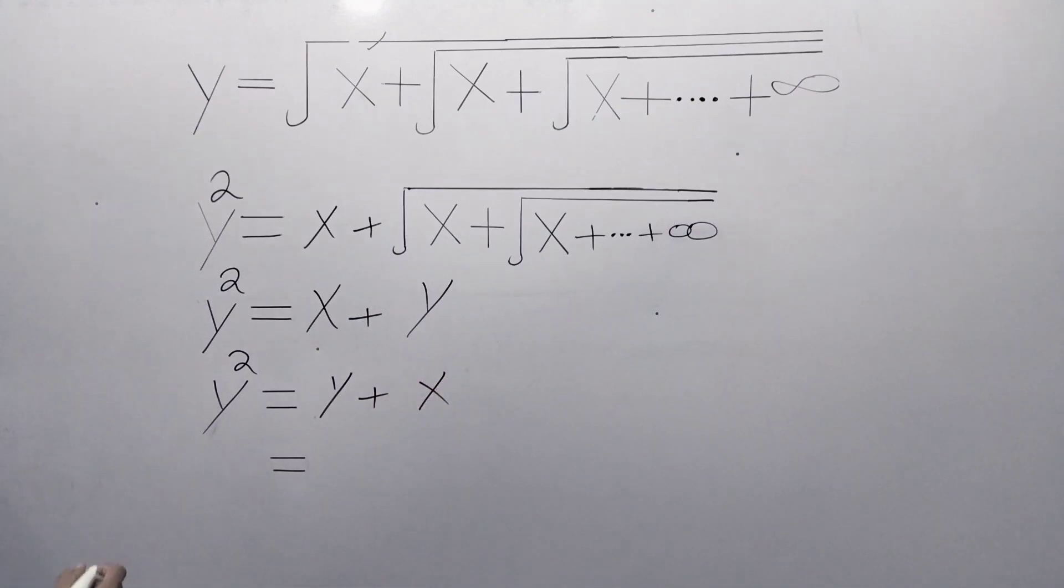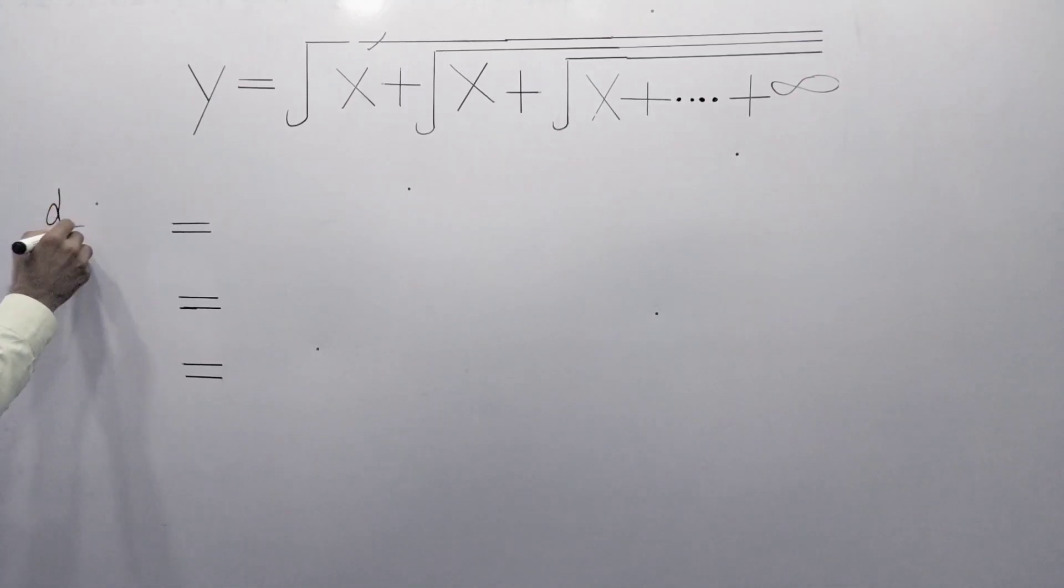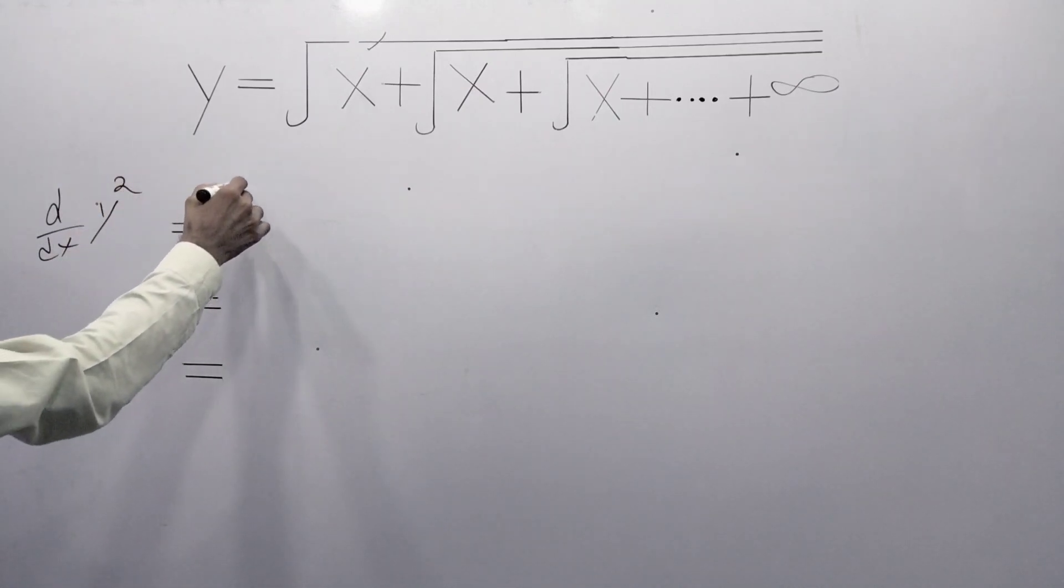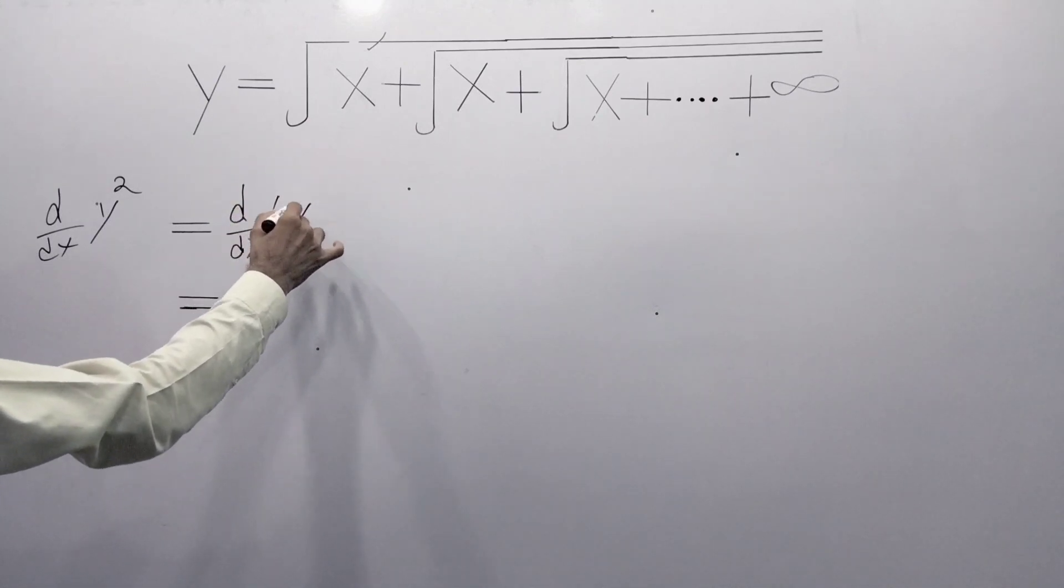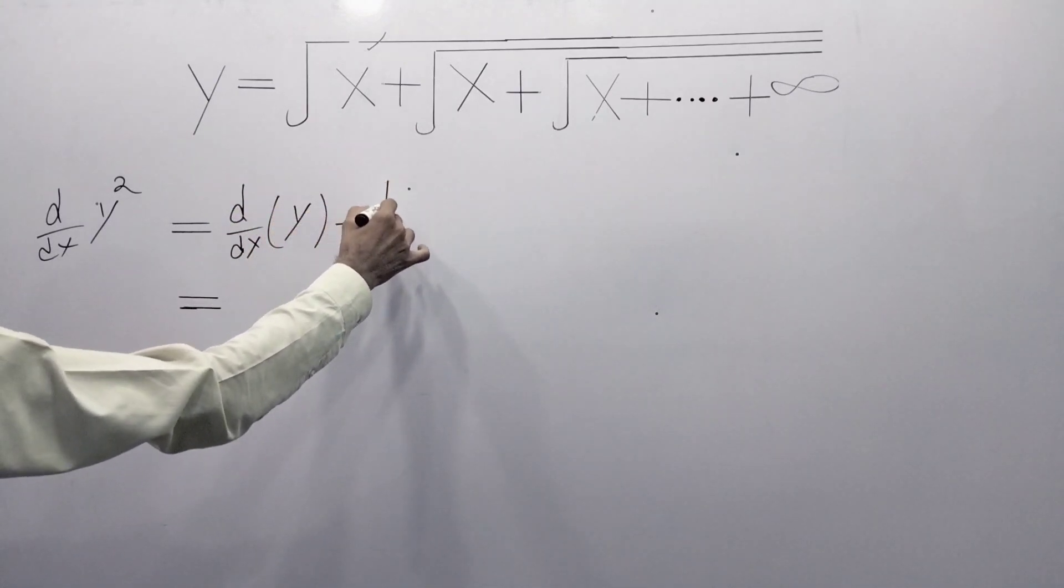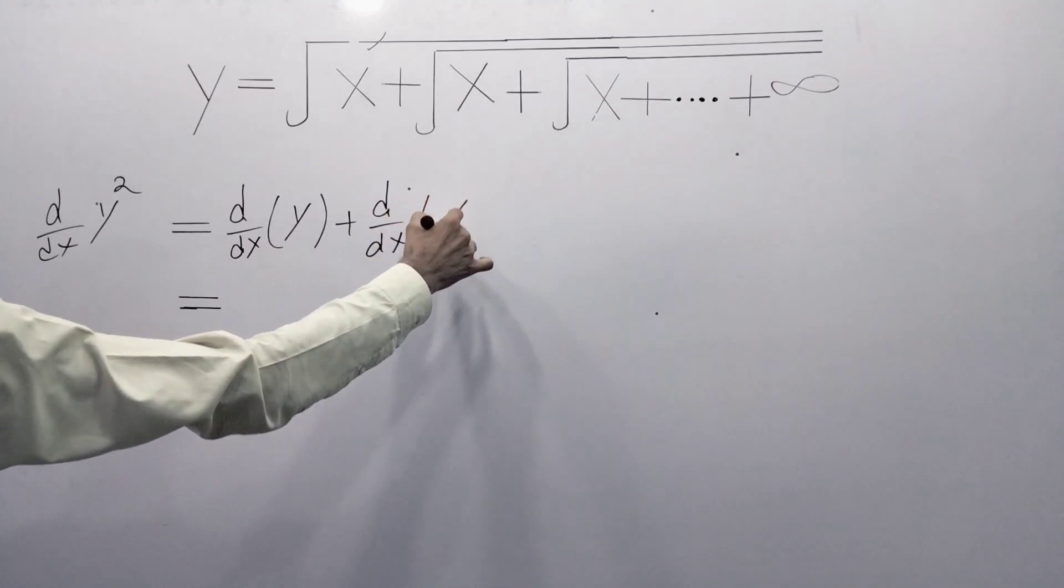Now differentiate it with respect to x: d over dx of y square equals d over dx of y plus x. Now d over dx of y square is equal to d over dx of y plus d over dx of x.